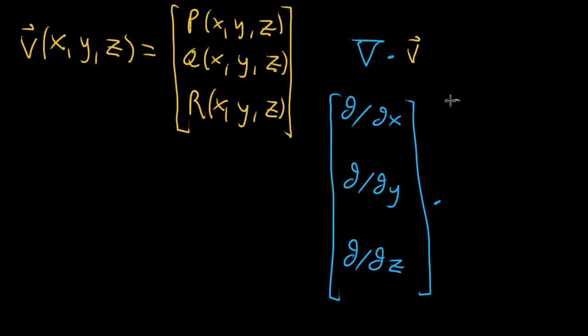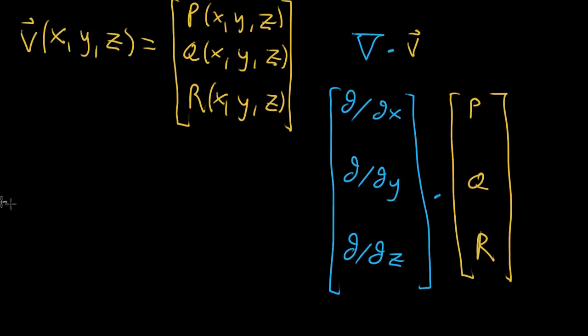And when you imagine taking the dot product between this and your p as a function, q as a function, and r as a function vector valued output, what you'd get is you take that ∂/∂x and kind of multiply it with p, which means you're really evaluating at p. Then you add ∂/∂y, and you're evaluating at q, because you're kind of imagining multiplying these second components, and then you'll add what happens when you multiply by these third components, where that's ∂/∂z by that last component.